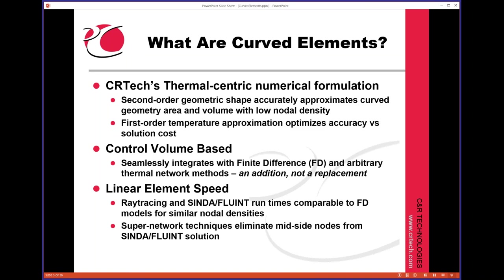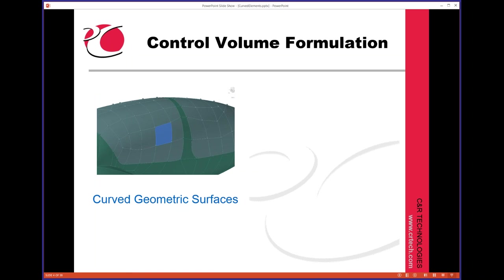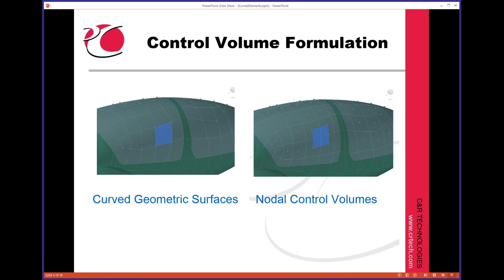So just another little explanation of the control volume. You make a curve – these don't look that curved, but they are – and you can toggle views in Thermal Desktop. You can say, show me nodal control volumes, and it's the same model. It's just showing the graphics a little different. Highlighted there, this element here is the same as this element here. In this view, we're just showing the nodal regions for each node.